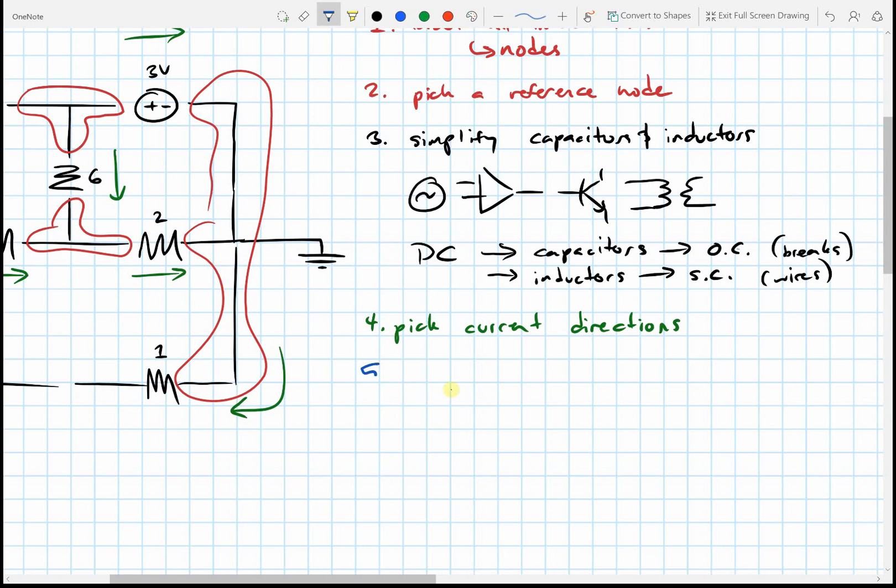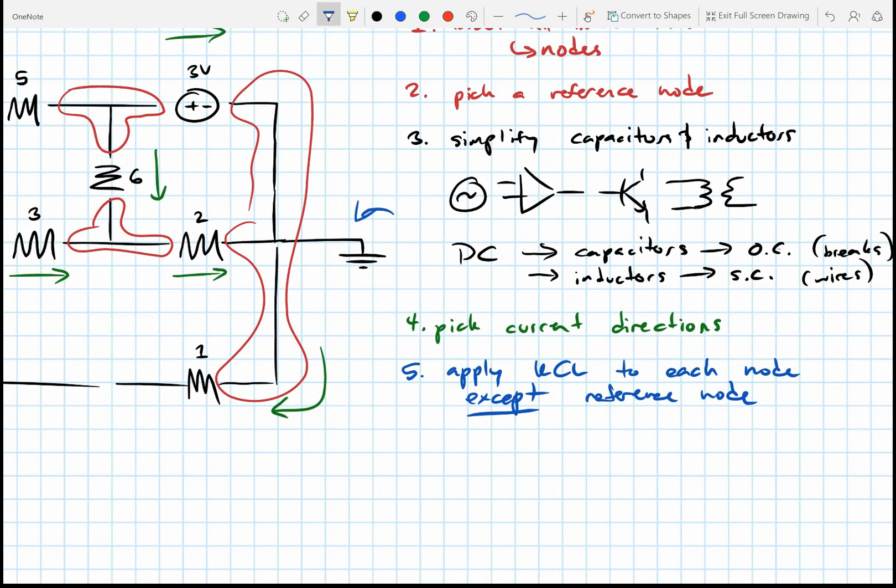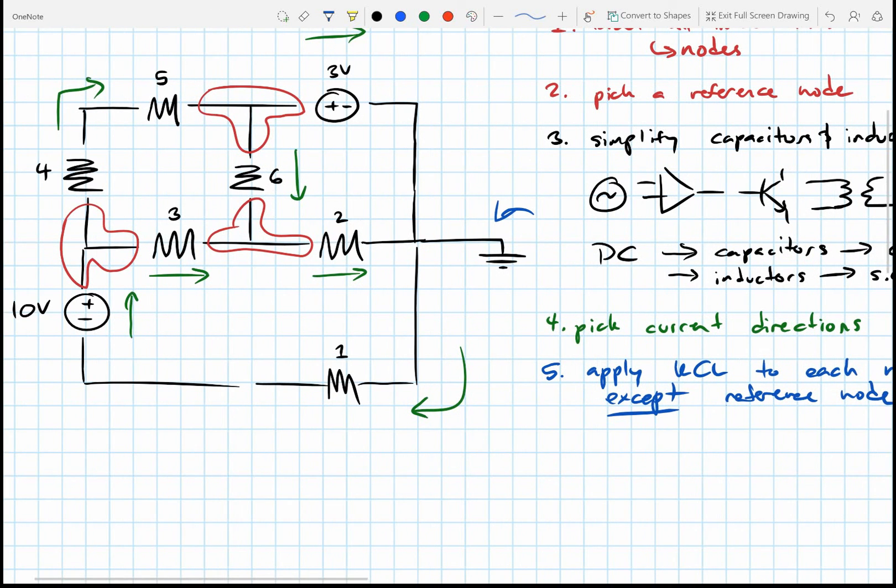Now we're getting to the fun stuff. So five: Apply KCL to each node except - this is a big except - reference node. So again we said our ground's right here. Doesn't matter. That's not a node anymore. That's just a reference. Everything right here is zero volts. That means it's not that interesting. Zero volts.